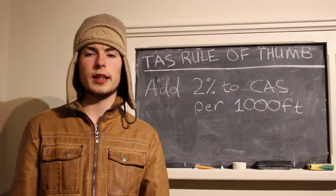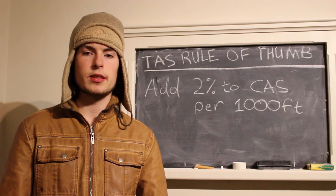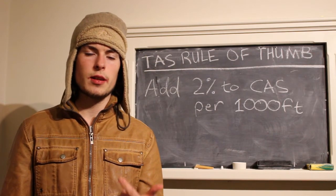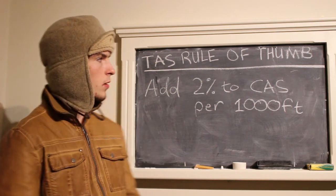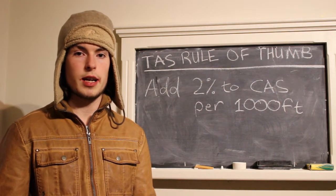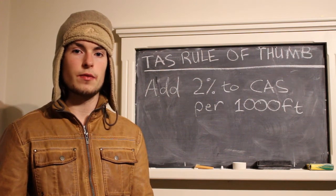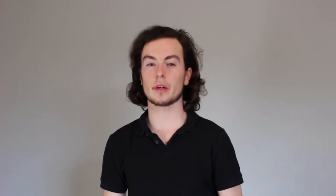There are two methods of calculating true airspeed. The most accurate is to use a flight computer, which takes your calibrated airspeed, your pressure altitude, and your temperature to calculate the value. The other method is to use the FAA rule of thumb, which says add 2% to your calibrated airspeed for every 1,000 feet of altitude. True airspeed is important because we use it when filing a flight plan.